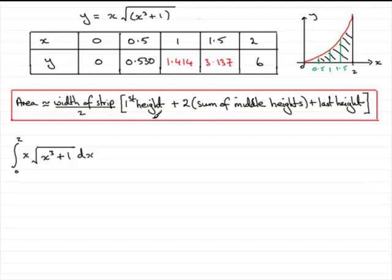So all you need to do is put these values into this formula. So we can say that this is approximately going to be half the width of a strip. So the width of a strip, as we said, is 0.5, divide it by 2 and then big square bracket.